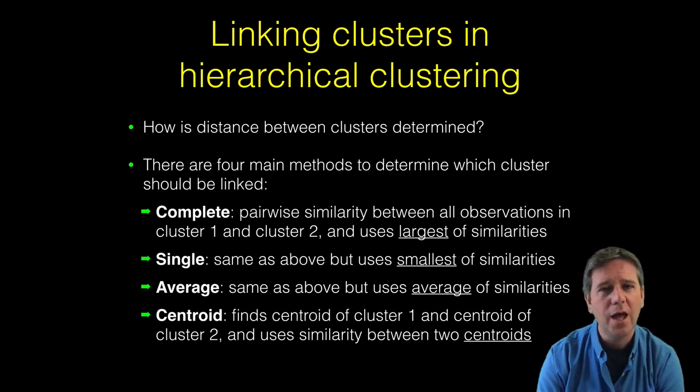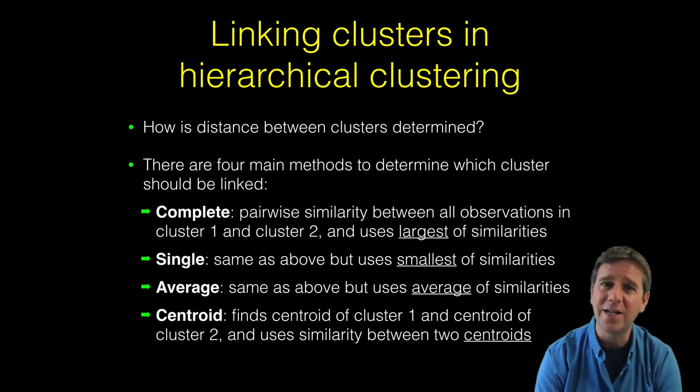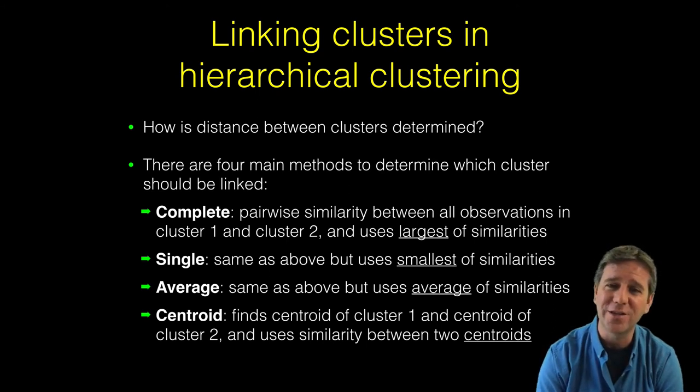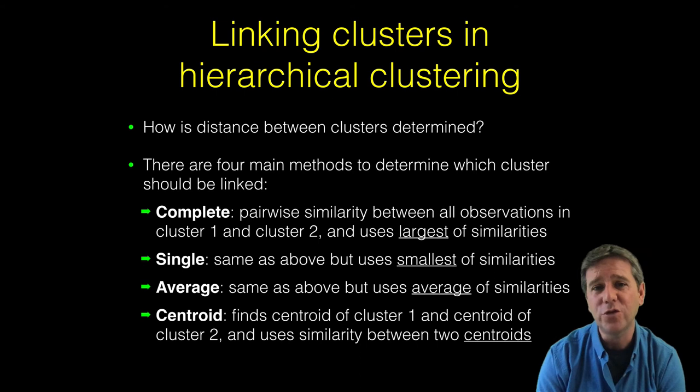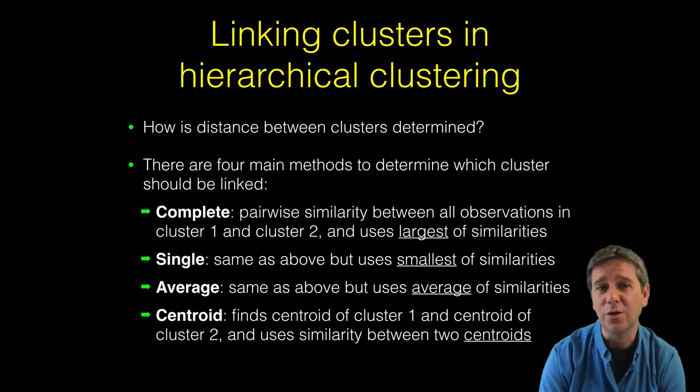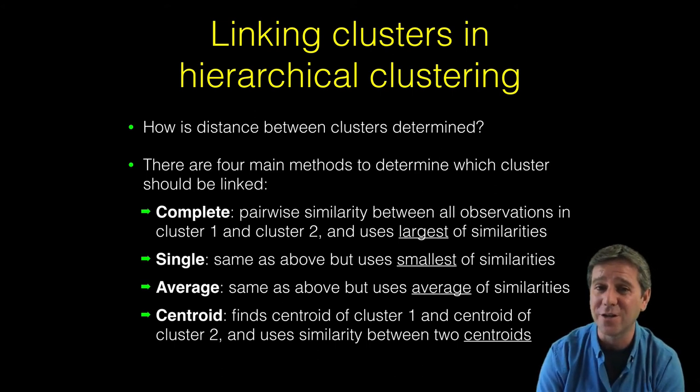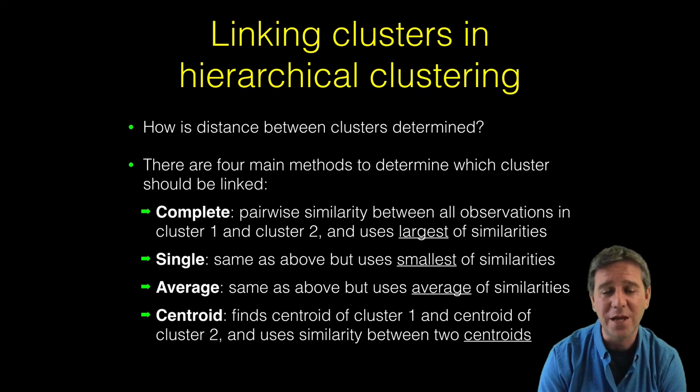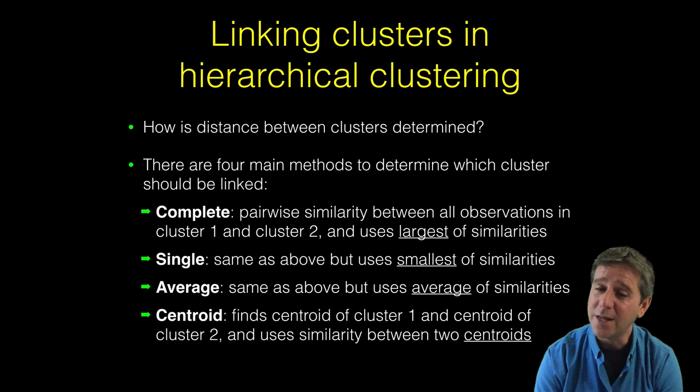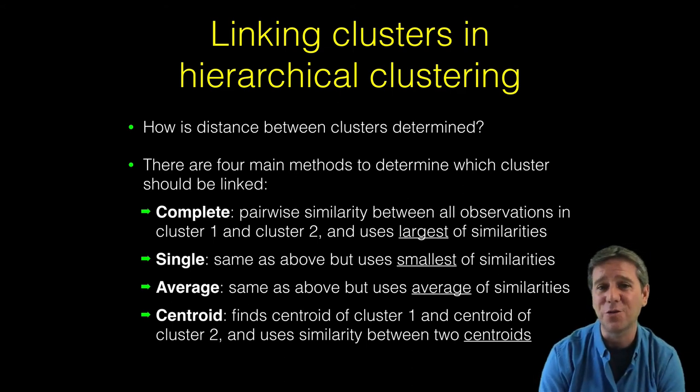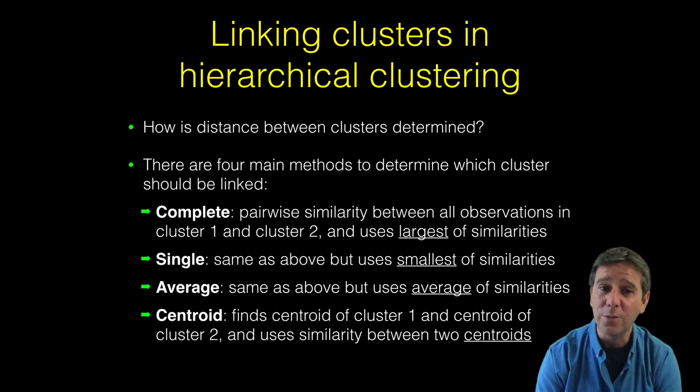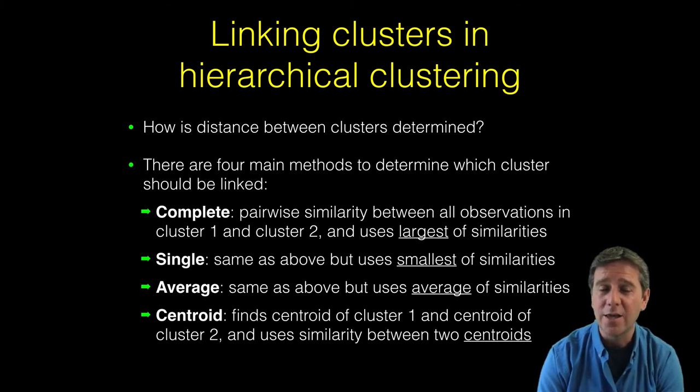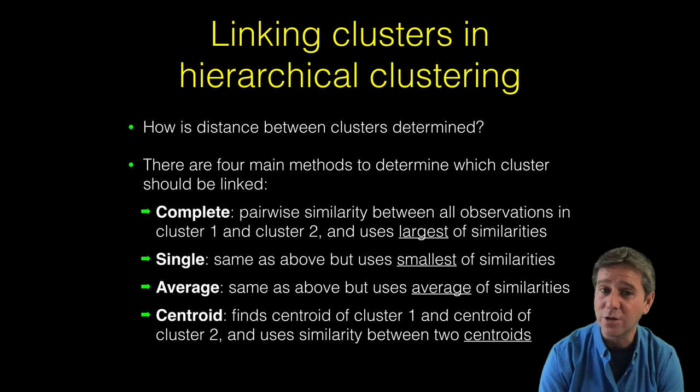As we've reviewed, hclust proceeds by linking clusters progressively in order of their distance apart or dissimilarity. How do we determine dissimilarity once you've got multiple points in a cluster? There are four main methods. Complete linkage calculates similarities between all points in one cluster and all points in the second cluster, then uses the largest of those distances.